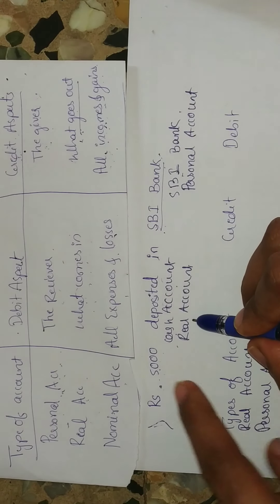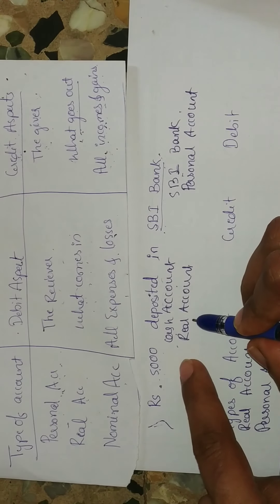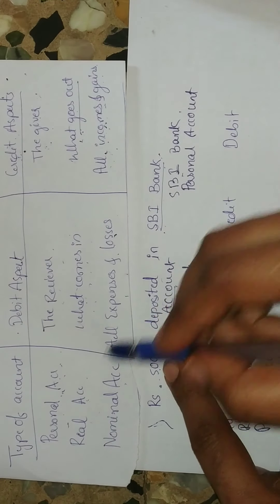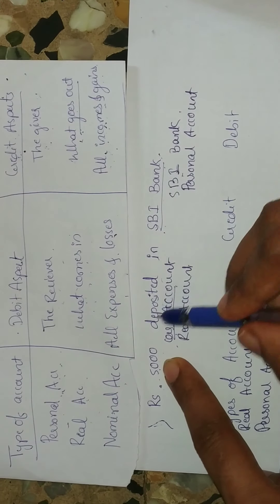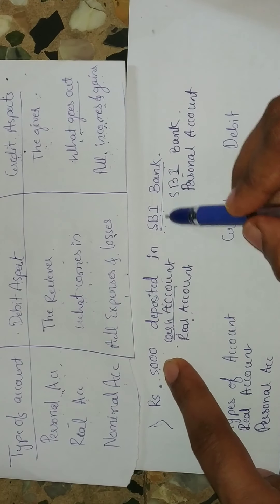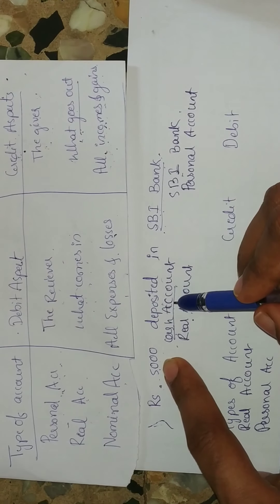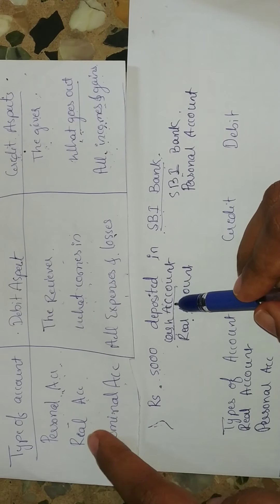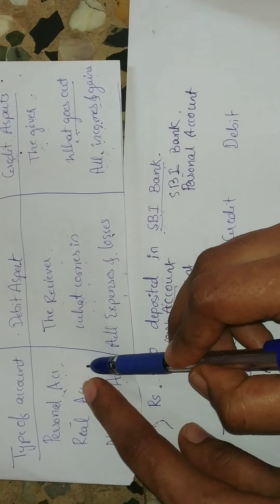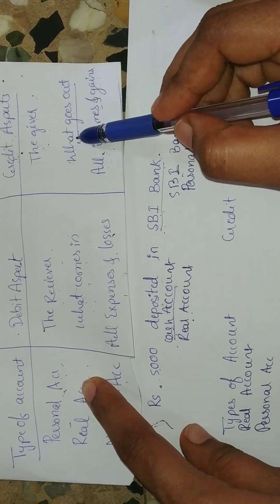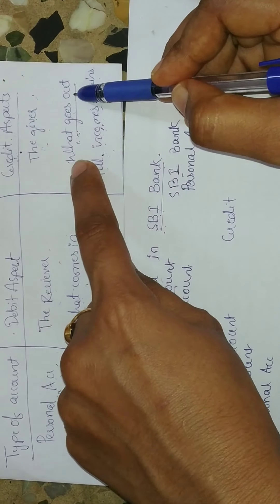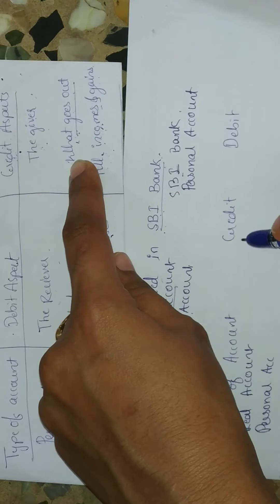In the real account, the cash account is affected. We are depositing the amount in SPI Bank, so cash is going out from our hand. Following the golden rule for real account — what goes out should be credited — so cash account will come under the credit aspect.